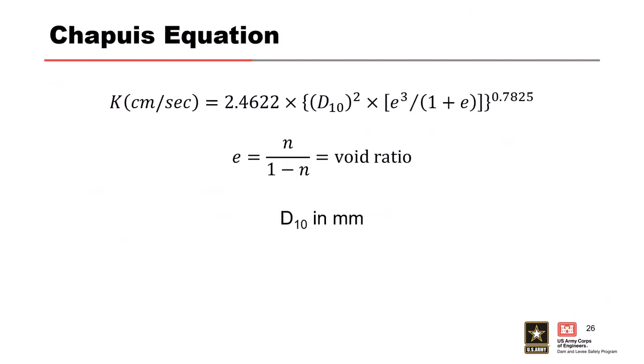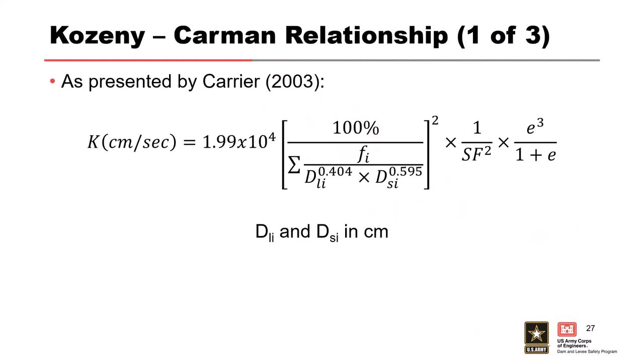Another equation is Kozeny-Carman — or similar — where in this case E is the void ratio, based on void ratio and D10. One of the more common ones these days is the Kozeny-Carman relationship, published most recently by Carrier in 2003. It takes a look at the whole range of soils in your gradation band and also considers a shape factor for the angularity of your soil.